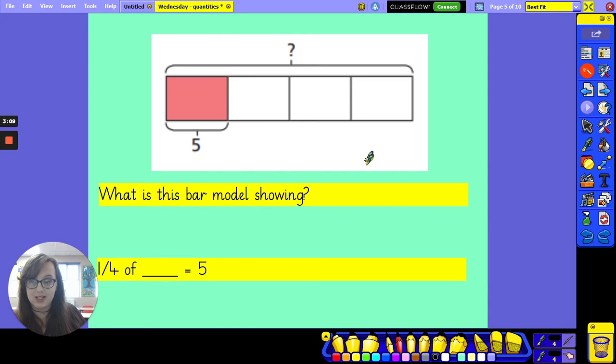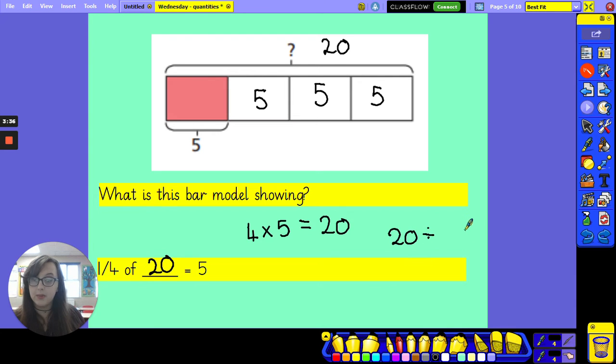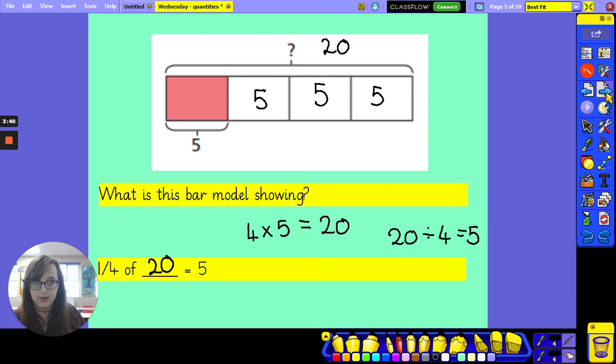I'm going to show you how I would work this out. So we know if one piece is worth five, all of the other pieces are worth five. So one quarter is five. Two quarters is ten. Three quarters is fifteen. Four quarters is twenty. So one quarter of twenty is five. And we know this because four lots of five, four times five, is twenty. And we know that twenty divided, split up into four parts, is five.